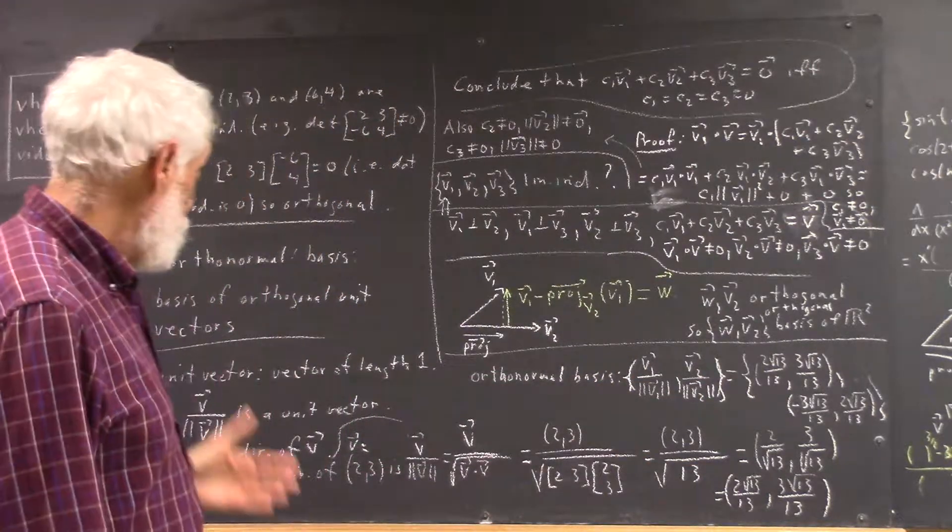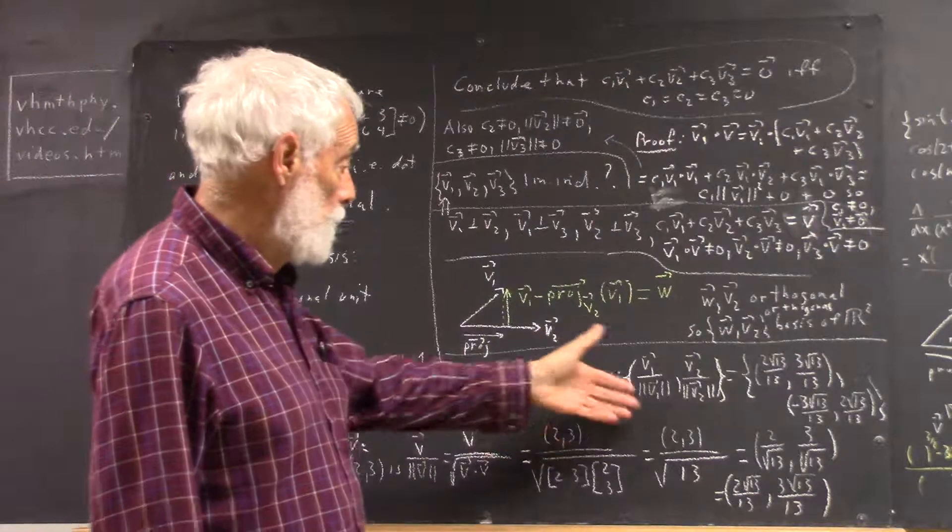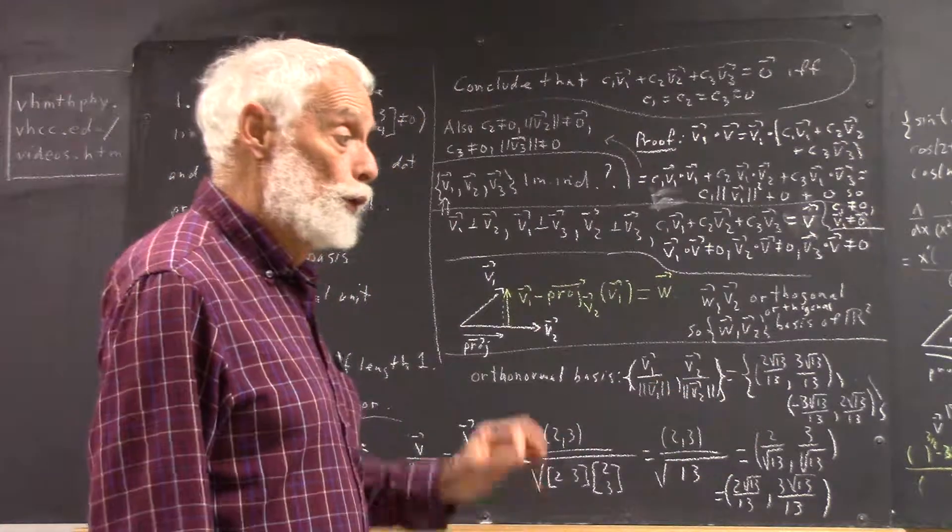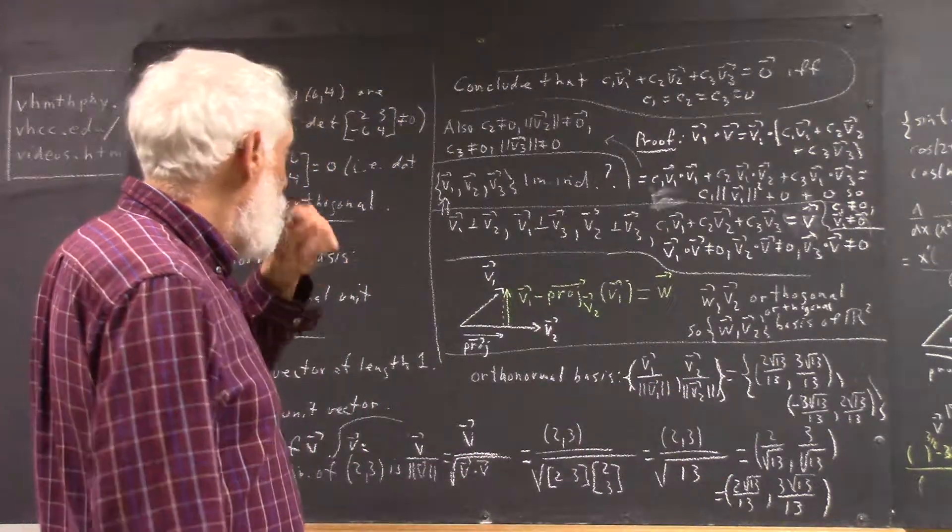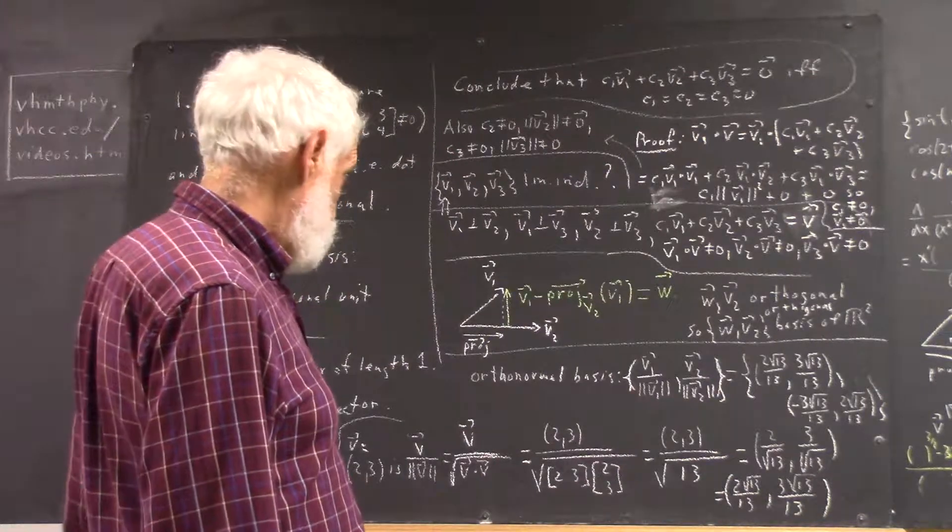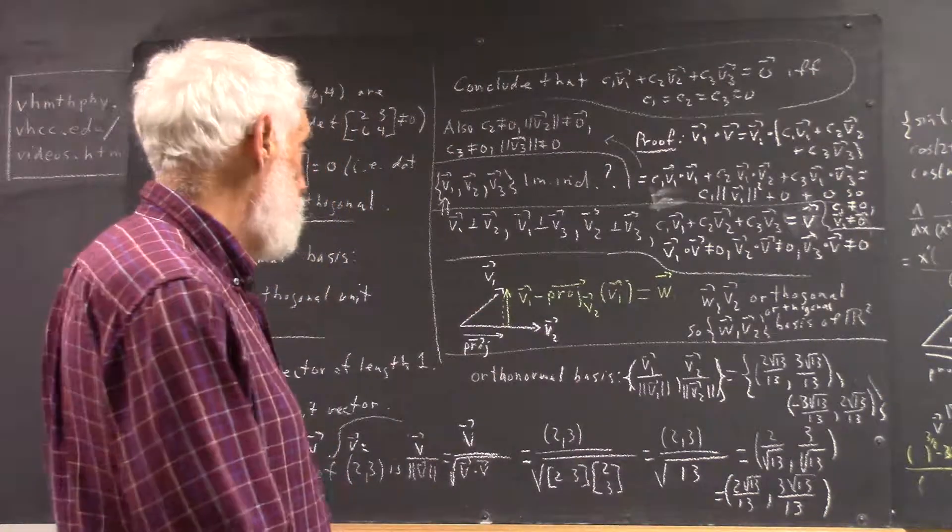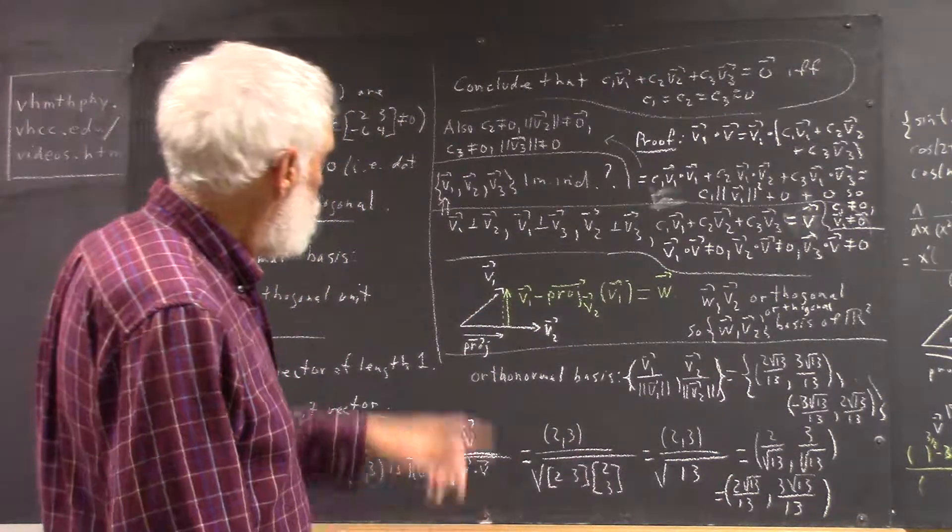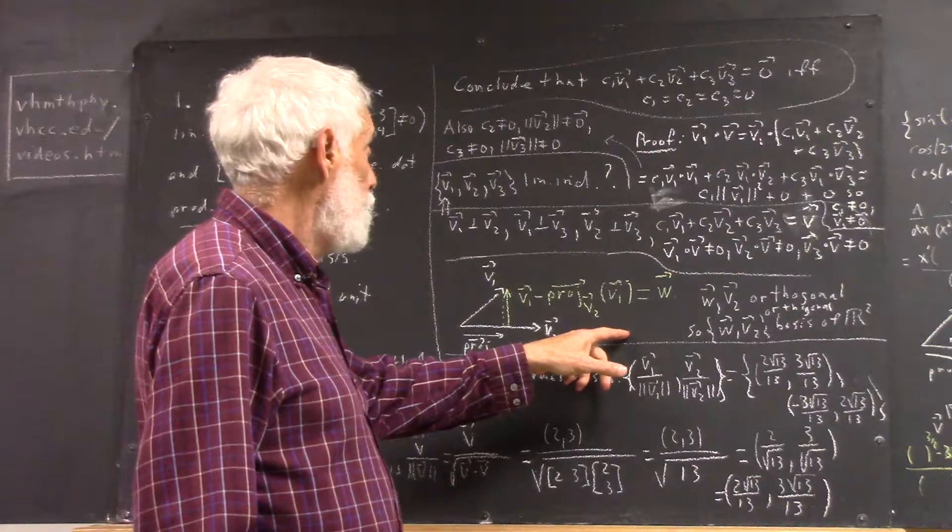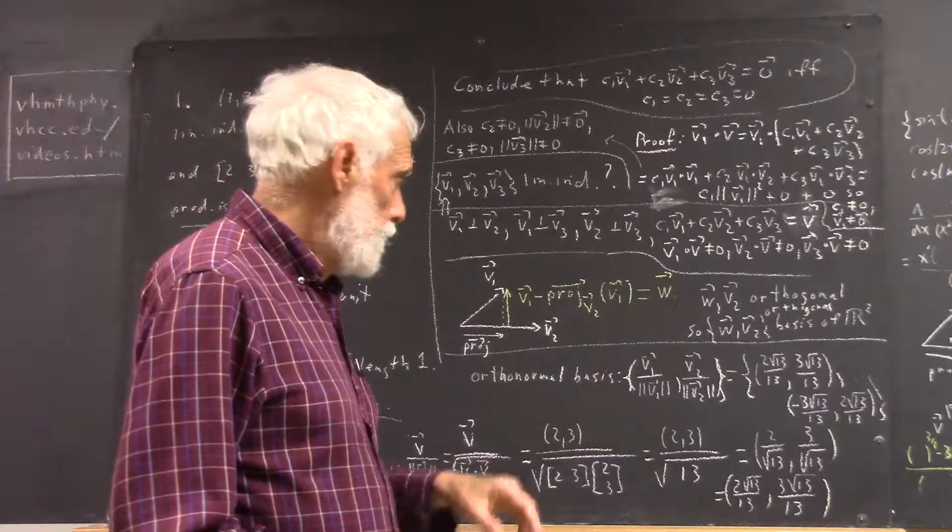Okay, so, you start with an orthogonal basis, you divide each vector by its magnitude, you get an orthonormal basis. Well, you want to look at this one idea here, and then we're going to do a little bit of a proof, okay.